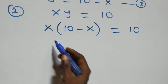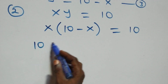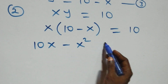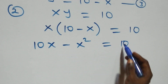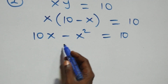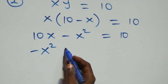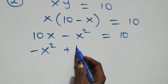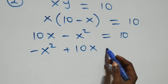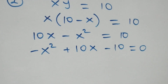Next step, we open this bracket: this becomes ten x minus x squared equals to ten on the right side. Then we rearrange and we have minus x squared plus ten x, and we take ten to this side to become minus ten, which equals to zero.